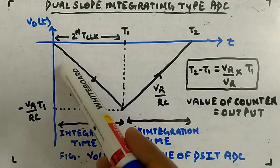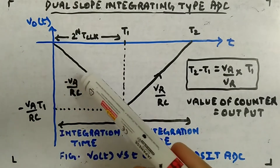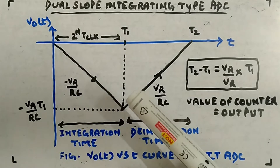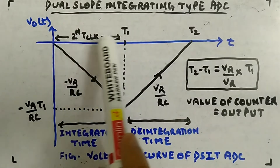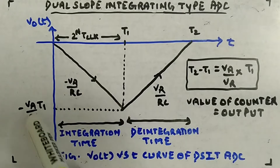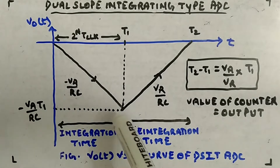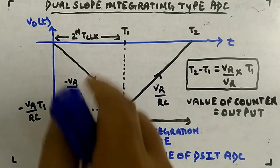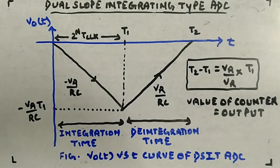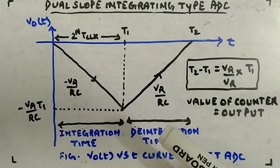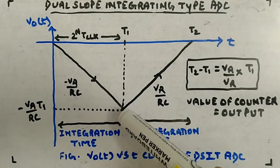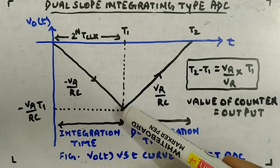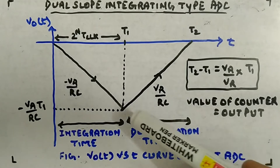When you connect the input voltage Va, the capacitor starts charging and V0 goes in the negative direction with a slope of minus Va divided by RC. At t1, the counter reaches its maximum value and resets. The time taken is 2 to the power n times t_clock. At this point the value of V0 is minus Va times t1 divided by RC, and the counter resets to zero — this is called the integration time.